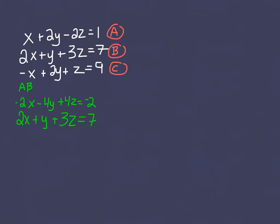I've copied down equations A and B, but I multiplied equation A by negative two all the way across in order to create an additive inverse to cancel out my X's. When I add these two equations together, my X's cancel, I get negative three Y plus seven Z equals five.